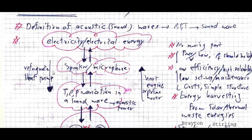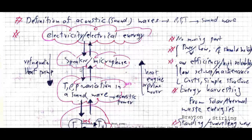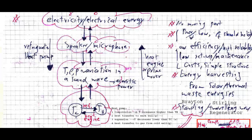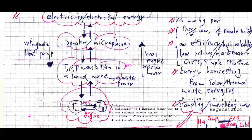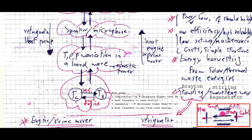Going from top to bottom in the heat pump direction: we have electricity and we use it to generate high-amplitude sound waves using a speaker. Along these sound waves we have temperature, density, and pressure variations — this is the acoustic power. The electric speaker converts electrical power to acoustic power, and then using a thermoacoustic refrigerator or heat pump we can convert this temperature gradient to heat transfer from the cold reservoir towards the hot reservoir.